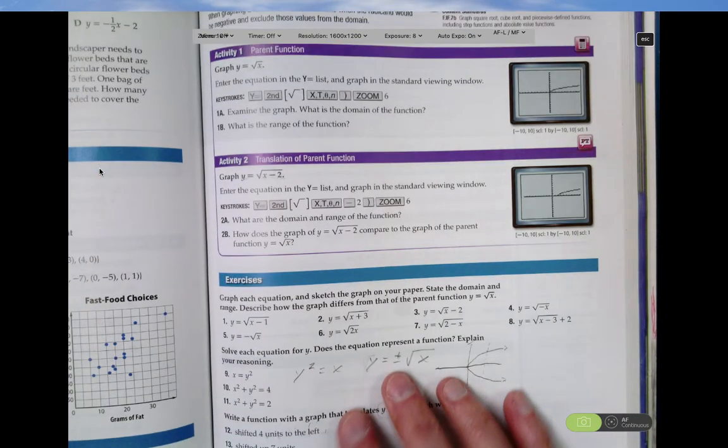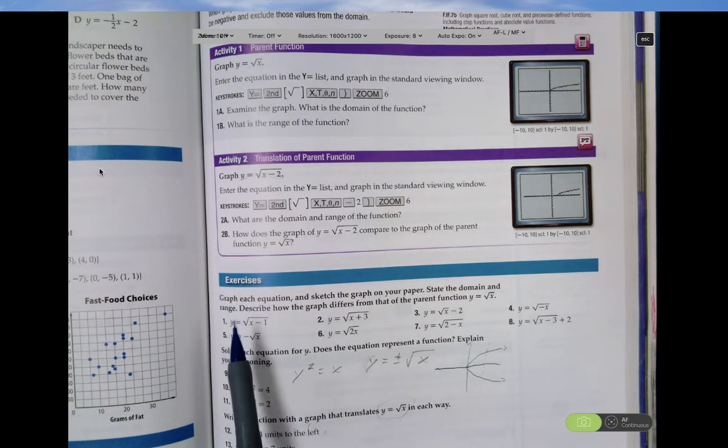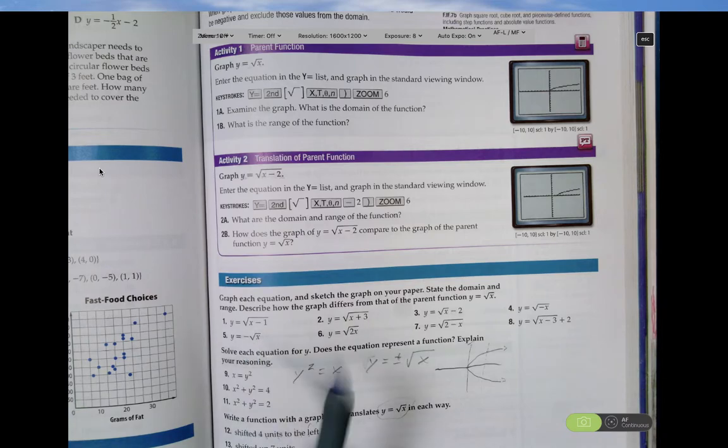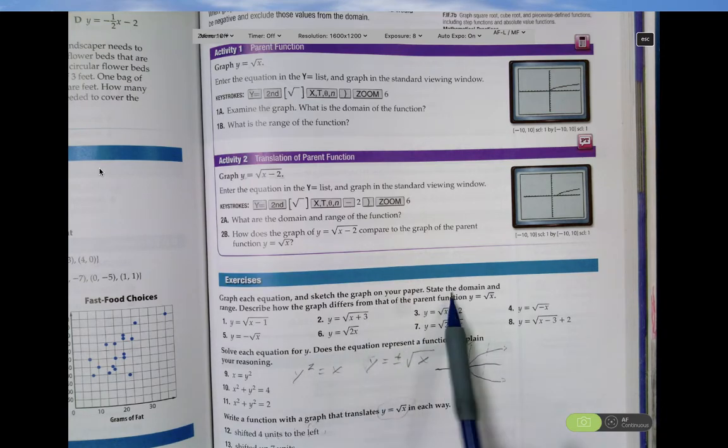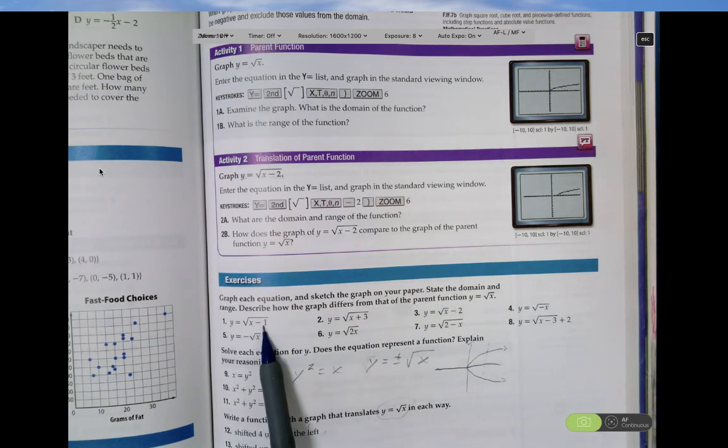The homework here asks you to put these things into your calculator and just sketch them. Describe how it varies. State the domain and range. For example, this is one shifted to the right one unit.